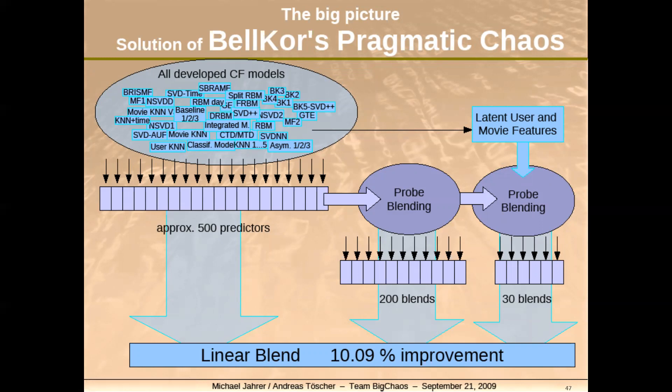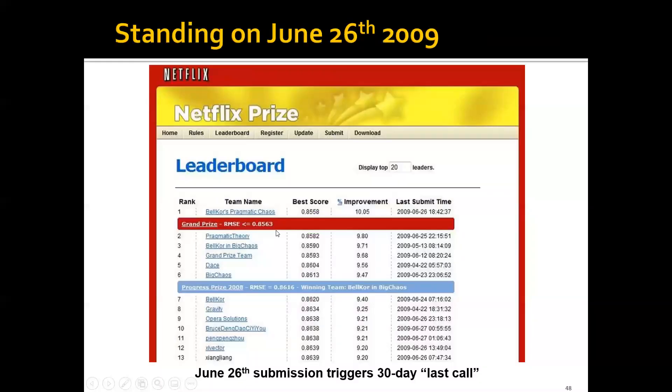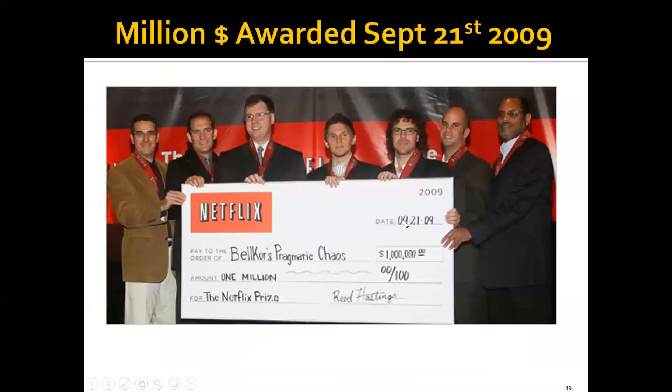They combine the predictions of all these 100 methods. You can think of it as the average of all of their predictions. Finally get a 10% improvement over the Netflix in-house model. We can see that in the leaderboard actually outperform this goal. A few months later, they're able to get this $1 million prize.